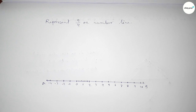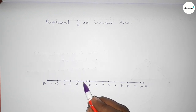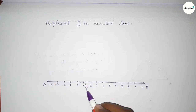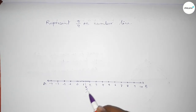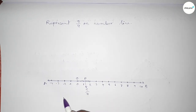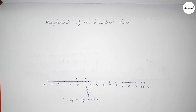So this is one over four, two over four, three over four, four over four, and this is five over four on the number line. Taking point O and point P, therefore OP equals five over four units. That's all — thanks for watching. If this video is helpful to you, please share it with your friends.